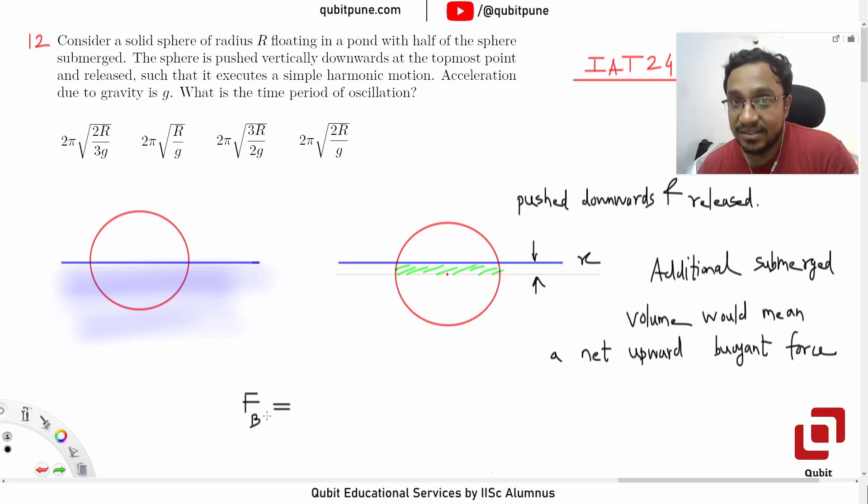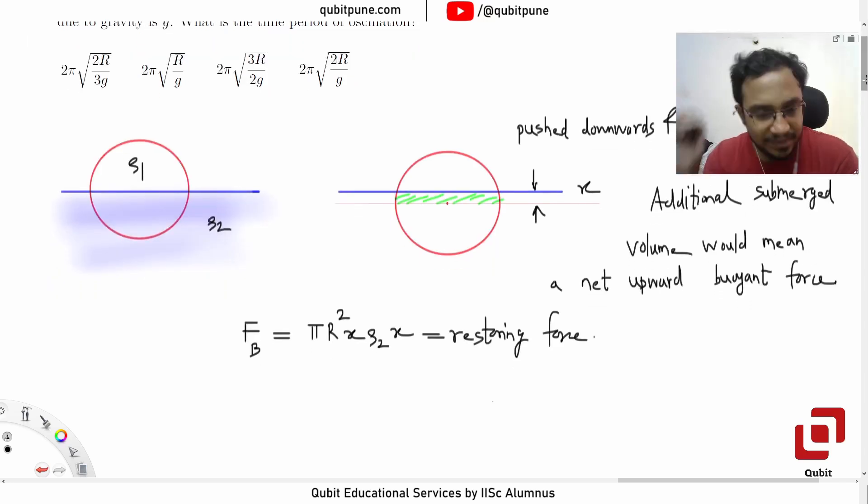FB equals this additional FB. The volume is area into this displacement x. This is the submerged volume. Let's say the liquid's density is ρ₂ and this density is ρ₁. So FB = πr²x·ρ₂g. This is the restoring force.